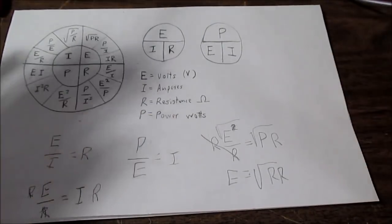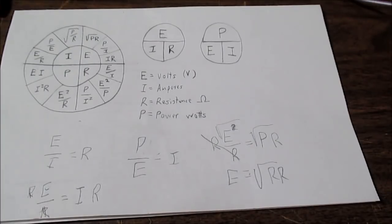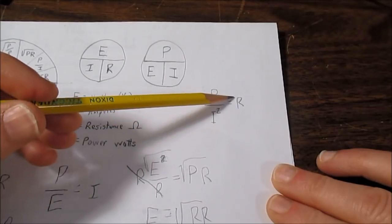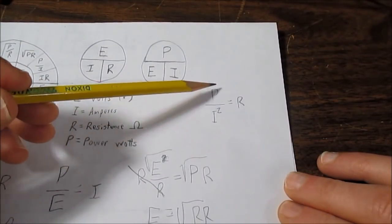Okay. So that is three quarters of this chart. Now we'll wrap it up. So the last three equations deal with power, current, and resistance. And if you look here, again, it's power on top.